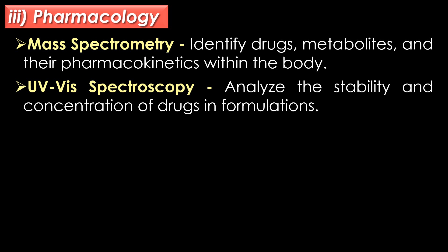In pharmacology, mass spectrometry is used to identify drugs, metabolites and their pharmacokinetics within the body. UV-visible spectroscopy is used to analyze the stability and concentration of drugs in formulations.